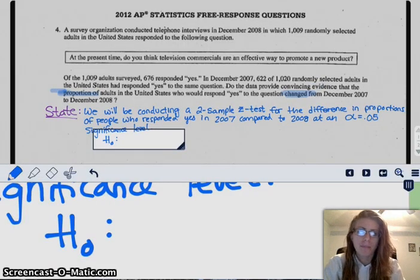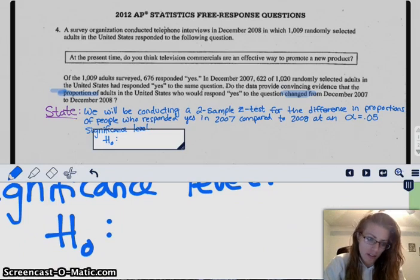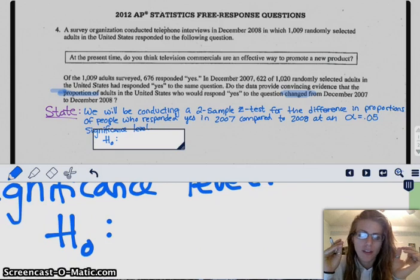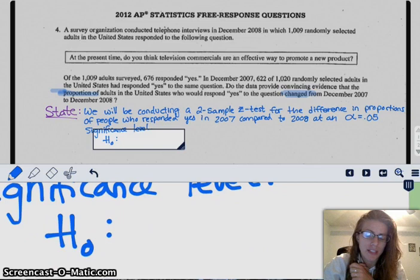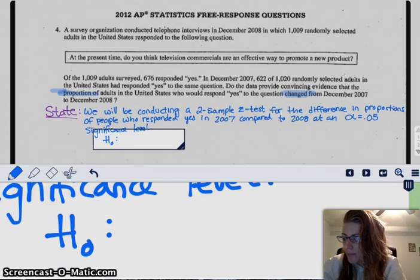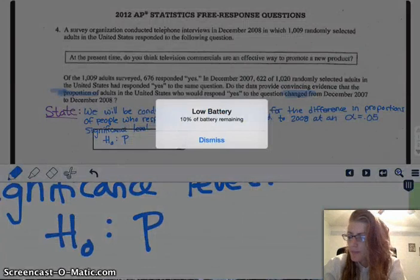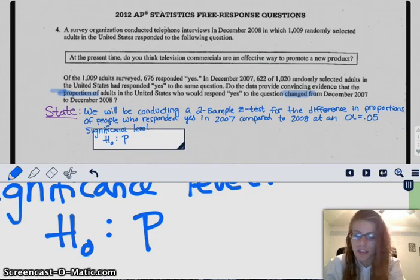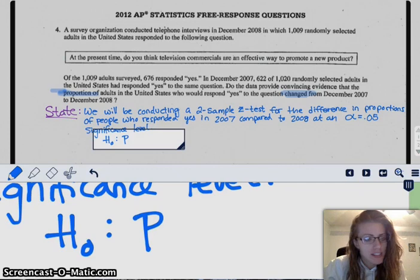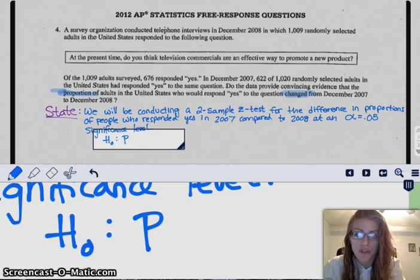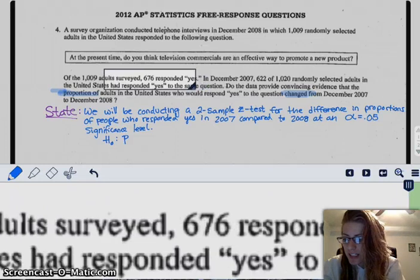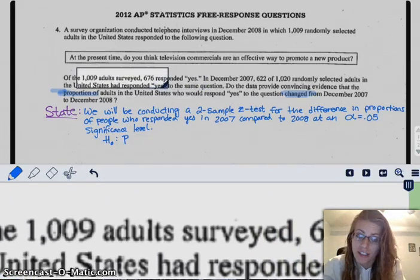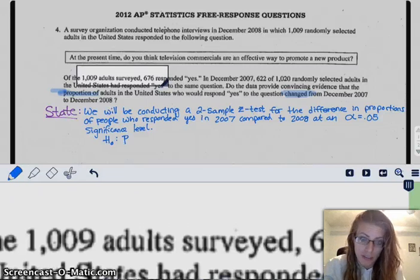Our null hypothesis is the thing that you're trying to prove to be wrong. If we have two different proportions, usually we're testing if they're equal or if the difference between them is zero. My null hypothesis is that my true proportion, remember, your hypothesis test is all about your parameters. It's about your population, not about the statistic. If you did a significance test for the statistic, that wouldn't make any sense at all because you already have the statistic. 676 out of 1009, that is your statistic. You have it. You don't need to do a test for it.